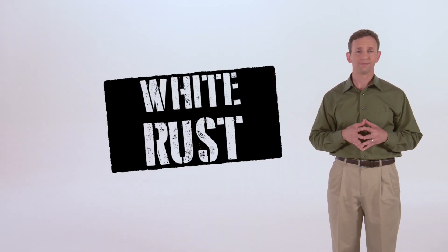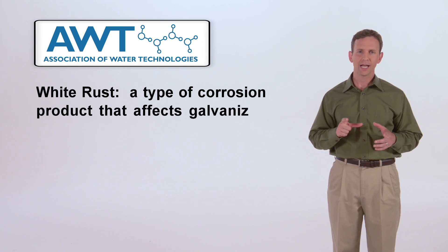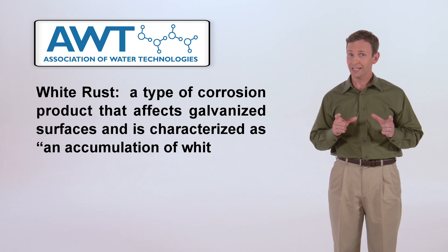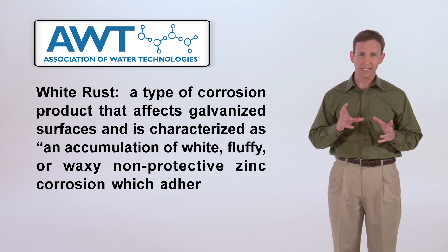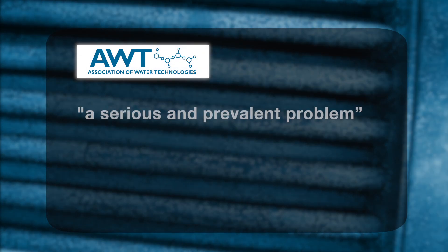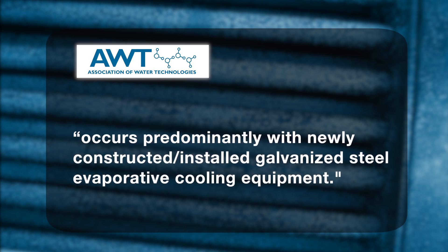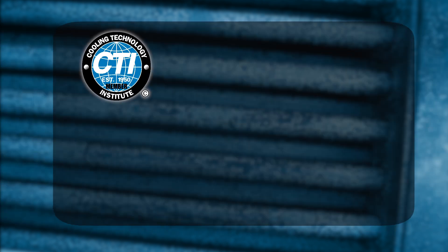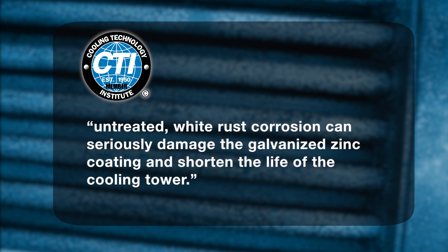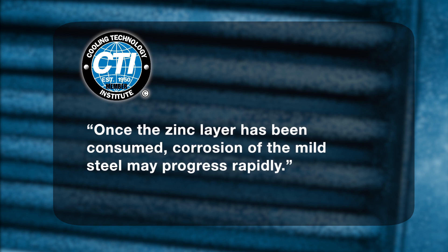And there we have it — white rust. The Association of Water Technologies defined white rust as a type of corrosion product that affects galvanized surfaces, characterized as an accumulation of white, fluffy, or waxy non-protective zinc corrosion, which adheres to the surface of galvanized steel. More importantly, a survey of AWT members identified white rust corrosion as a serious and prevalent problem, which occurs predominantly with newly constructed, installed galvanized steel evaporative cooling equipment. The Cooling Technology Institute stated in their 1994 publication that untreated, white rust corrosion can seriously damage the galvanized zinc coating and shorten the life of the cooling tower. Once the zinc layer has been consumed, corrosion of the mild steel may progress rapidly.